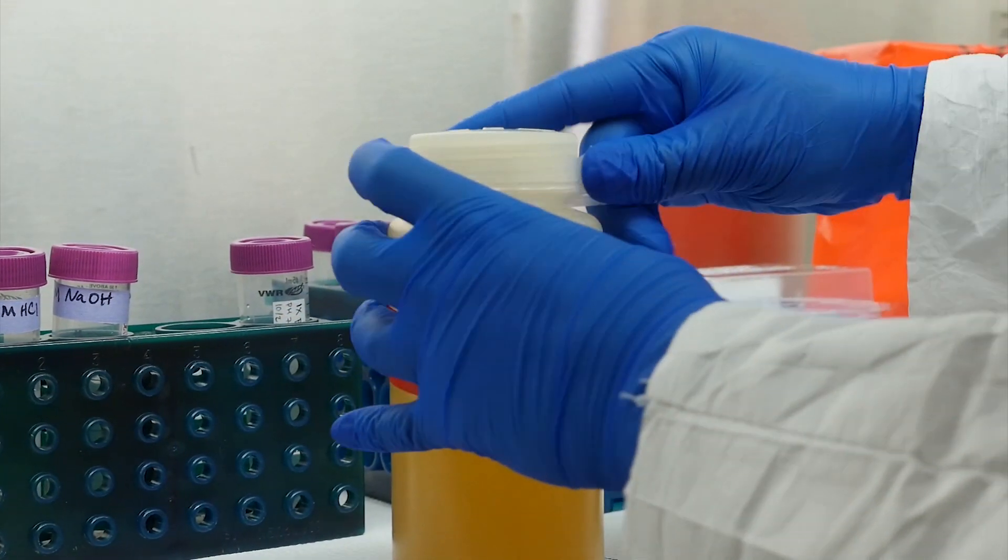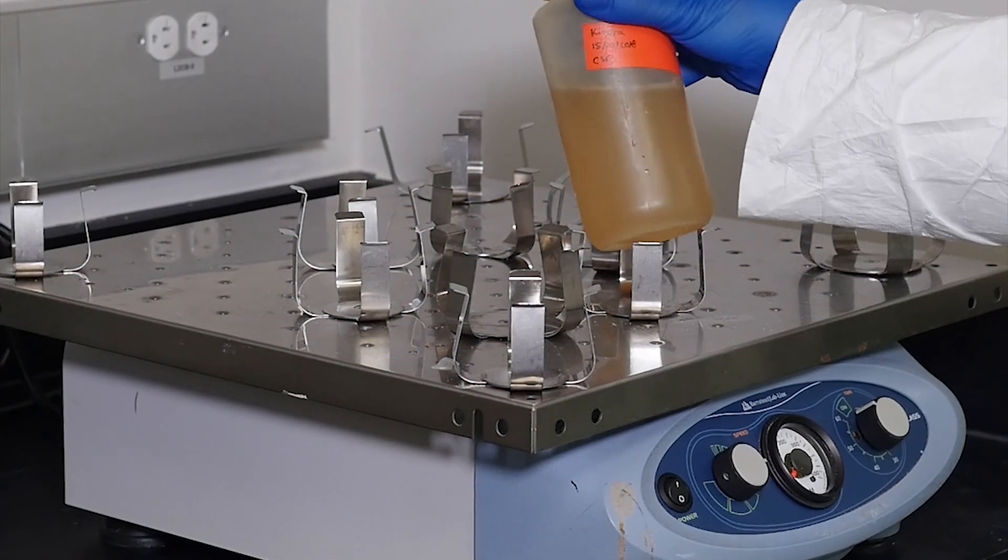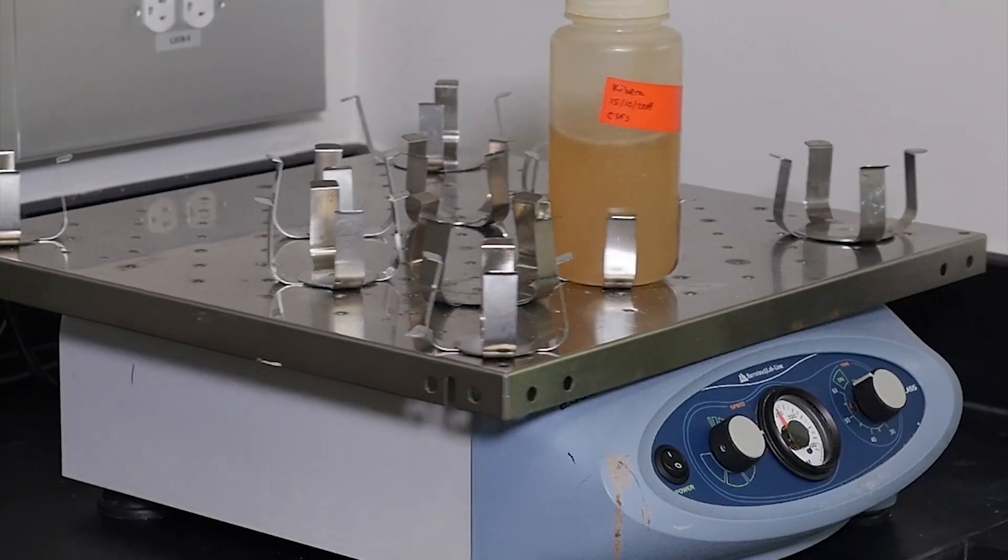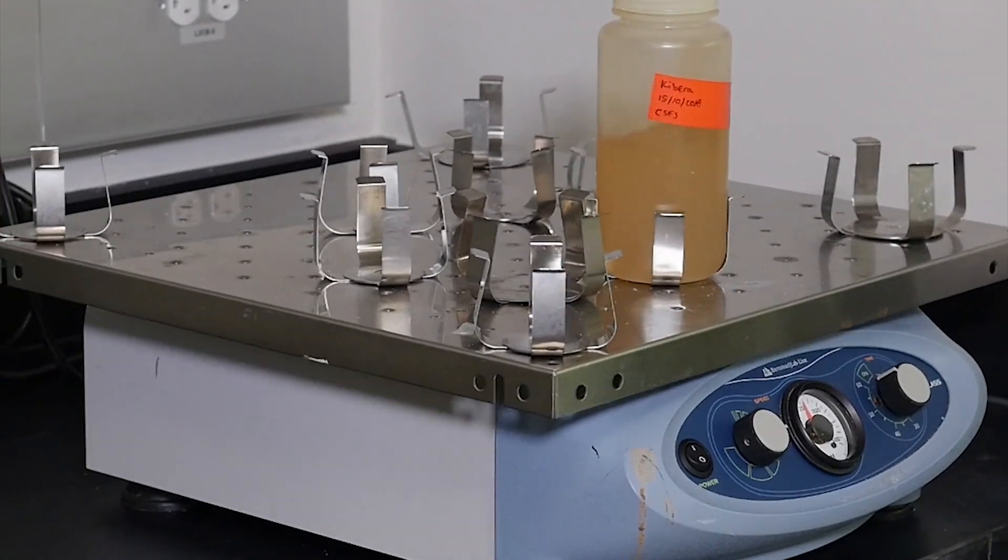Parafilm the sample bottle. Place the sample on a shaker at room temperature for two hours. Choose a speed that will get you a nice, even shake.